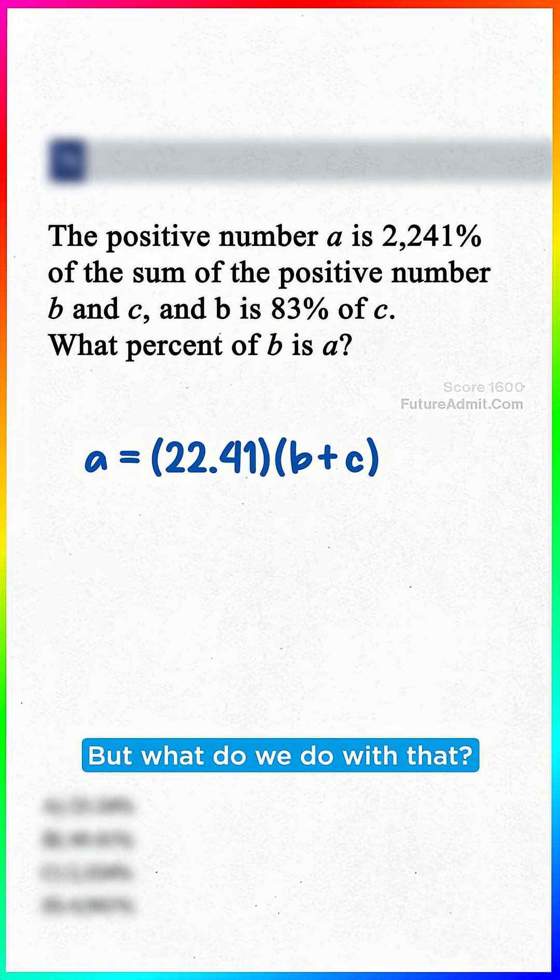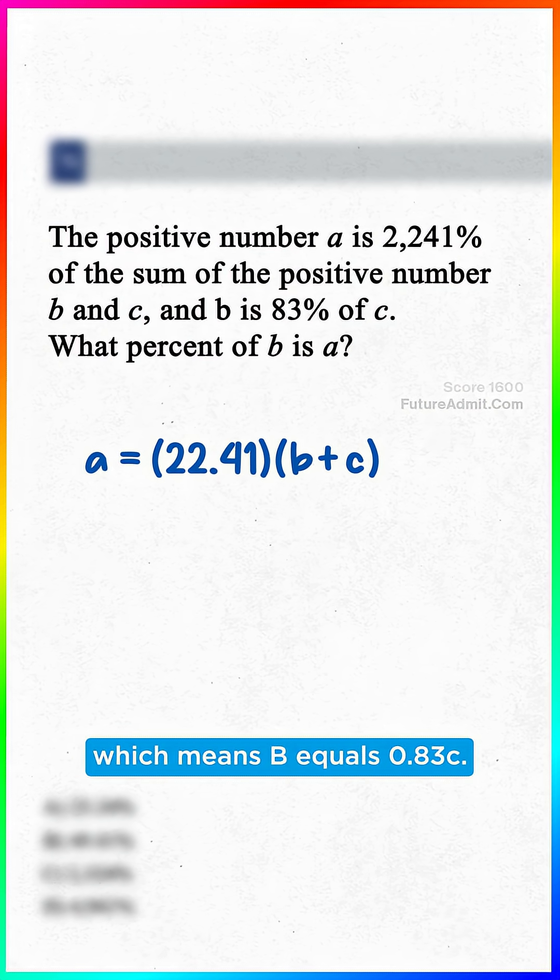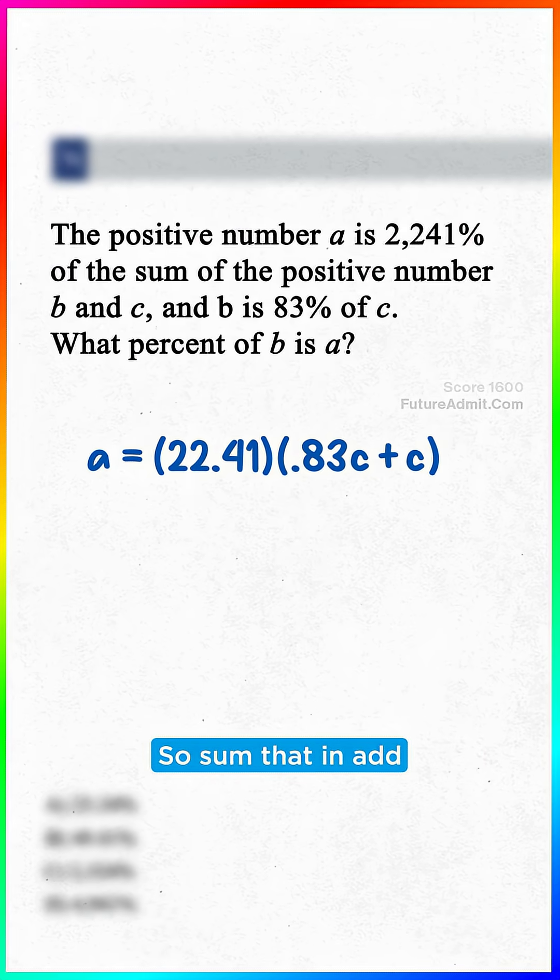Okay, sweet, but what do we do with that? Well, it says B is 83% of C, which means B equals 0.83C, so sub that in.